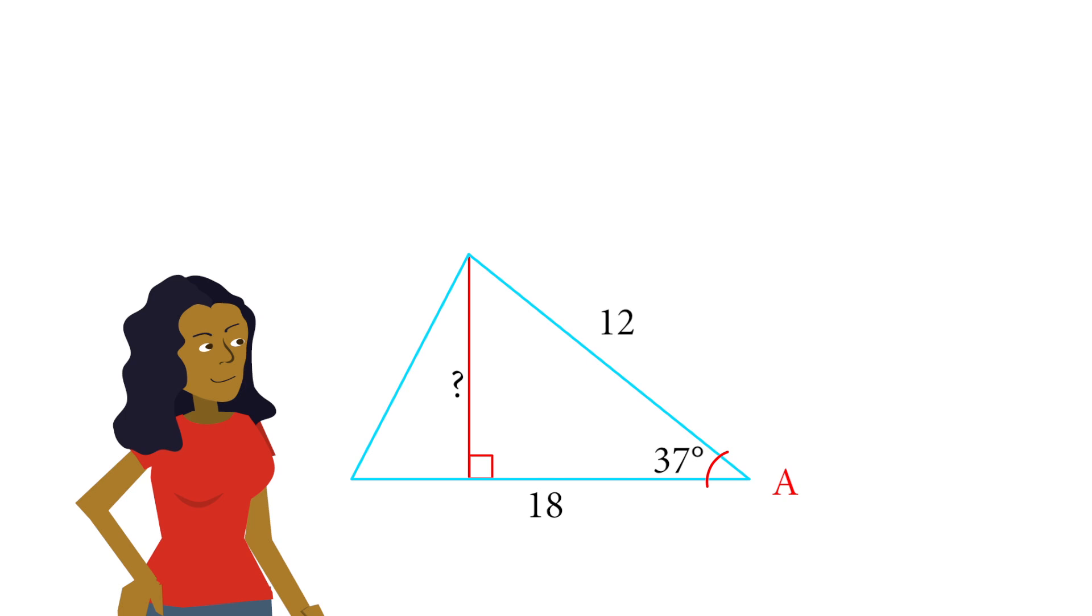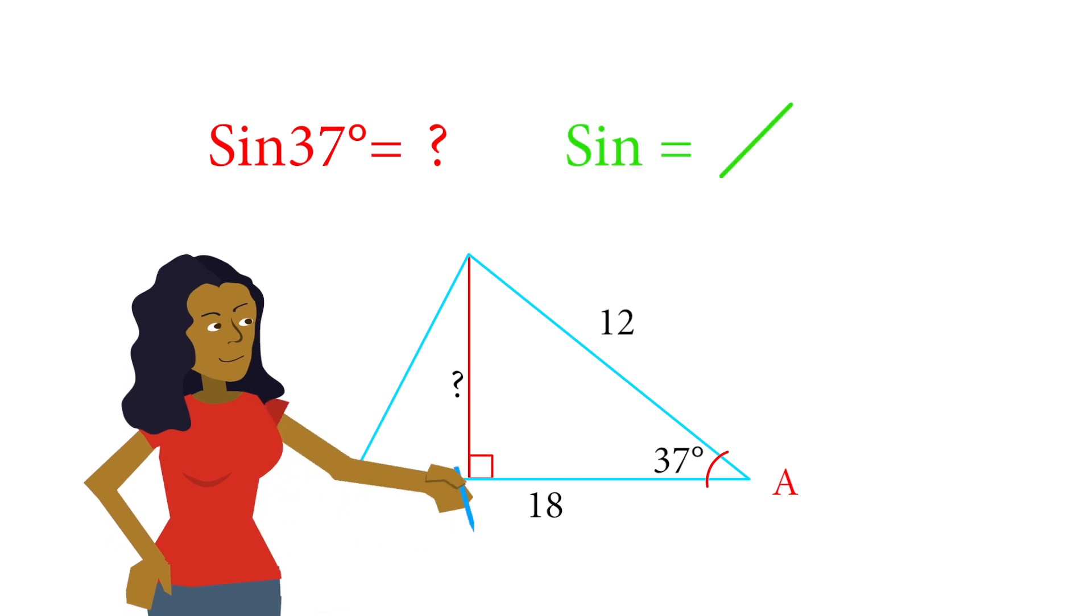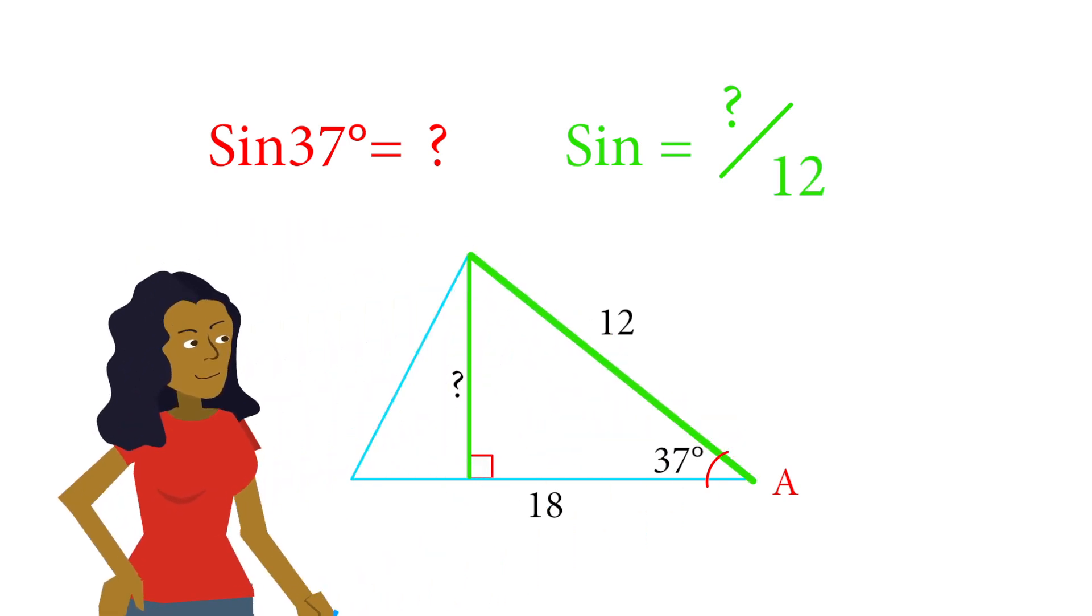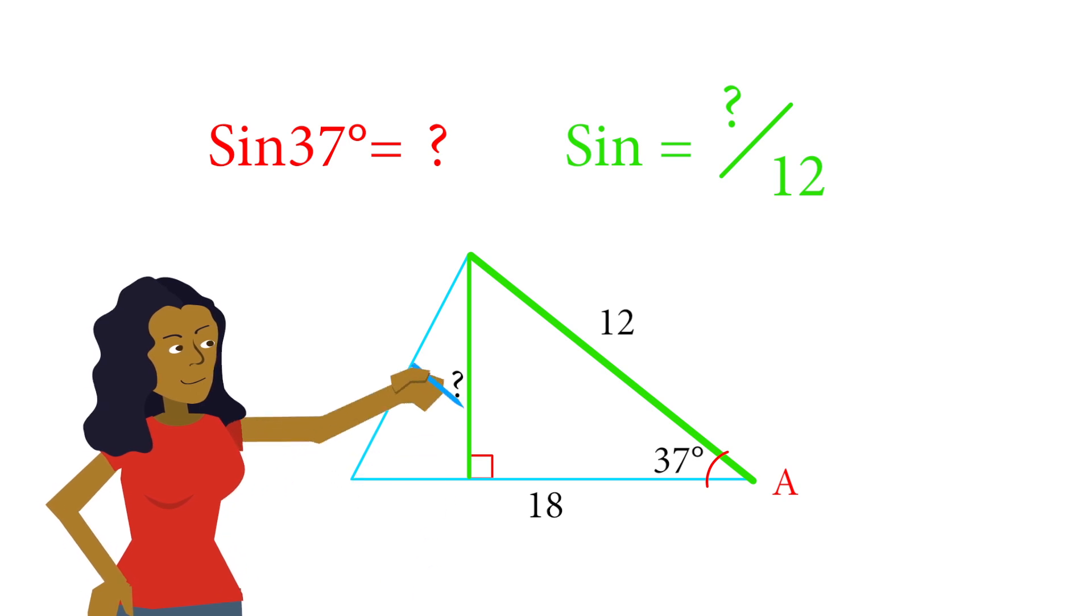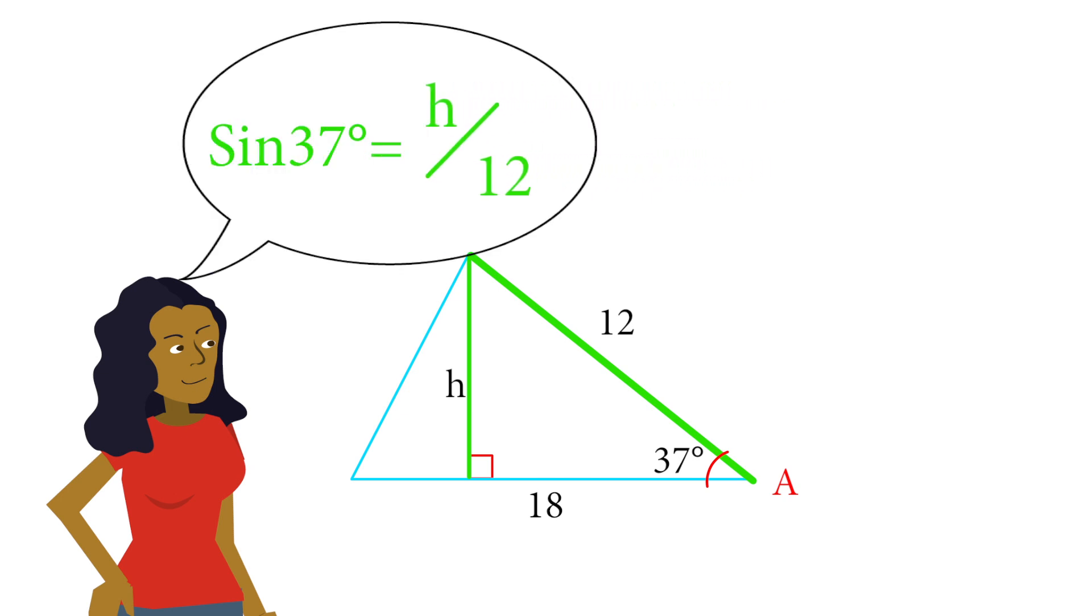What we want to do is say, what is the value of sine of 37 degrees for this triangle? Well, we know the sine represents the ratio between the leg opposite the angle and the hypotenuse. So we're going to call the leg opposite our angle in our right triangle H because that's exactly what it is. It's the height of that triangle. So we can say sine of 37 degrees equals H over our hypotenuse, which is 12.